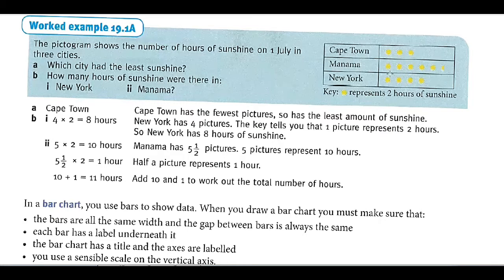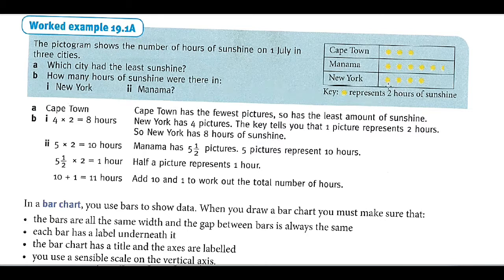How many hours of sunshine are there in New York? New York has two, four, six, eight hours, so eight hours. Manama has eleven hours: ten is here and half is here, so we'll say eleven hours.